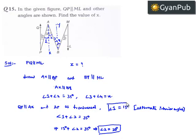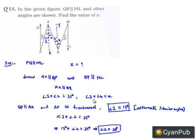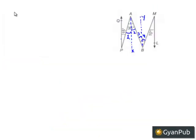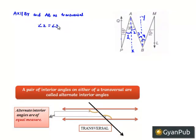So, angle 1 is equal to 15 degrees and angle 2 is equal to 20 degrees. Now, let us consider AX is parallel to BY with AB as transversal. About this transversal, angle 2 and angle 3 are alternate interior angles. Therefore, angle 2 equals angle 3, and since angle 2 is 20 degrees, angle 3 is also equal to 20 degrees.